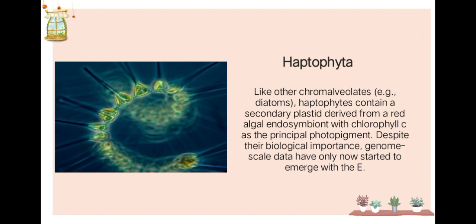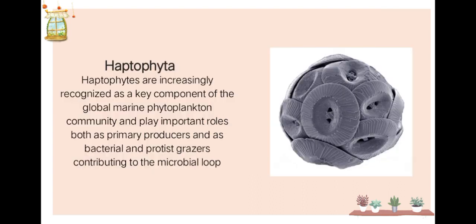The Haptophyta, like other chromalveolates, contains secondary plastids derived from a red algal endosymbiont, with chlorophyll as the principal photopigment. Despite their biological importance, genome-scale data have only recently started to emerge. Haptophytes are increasingly recognized as a key component of the global marine phytoplankton community, playing important roles both as primary producers and as bacterial and protist grazers contributing to the microbial loop.